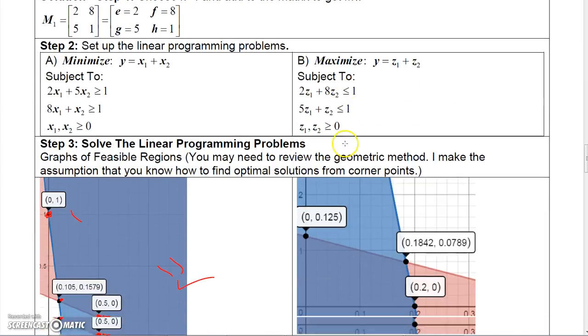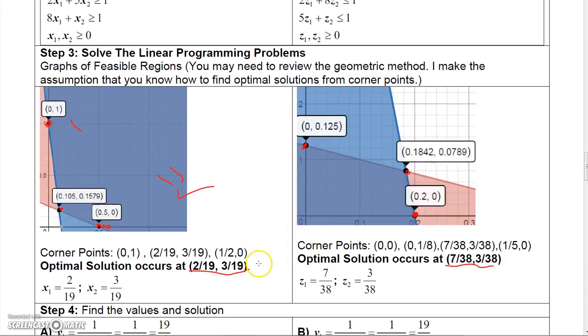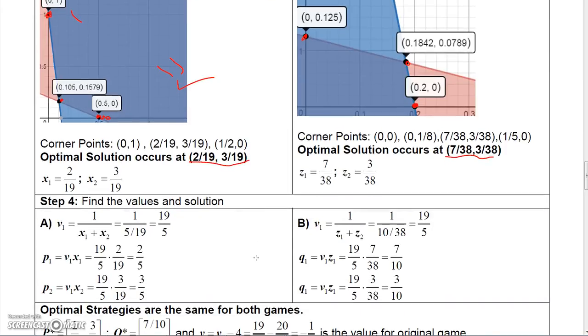On the other one, if you solve it by graphing, you would graph this equation and this equation, and this would be the Z2 axis and the Z1 axis. When I graphed it, I got a bounded region, which had these three corner points. 0, 0 is a corner point, too, but that's not going to maximize the function. This would be 0, 1 8th. So this is actually 7 38ths and 3 38ths, and this is 1 5th 0. Using these three corner points, I found out that 7 38ths and 3 38ths were the values that maximize that function.